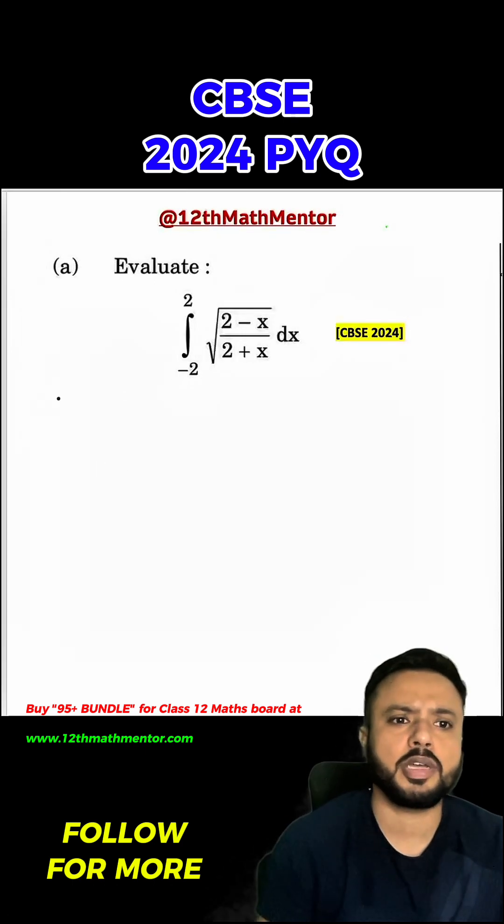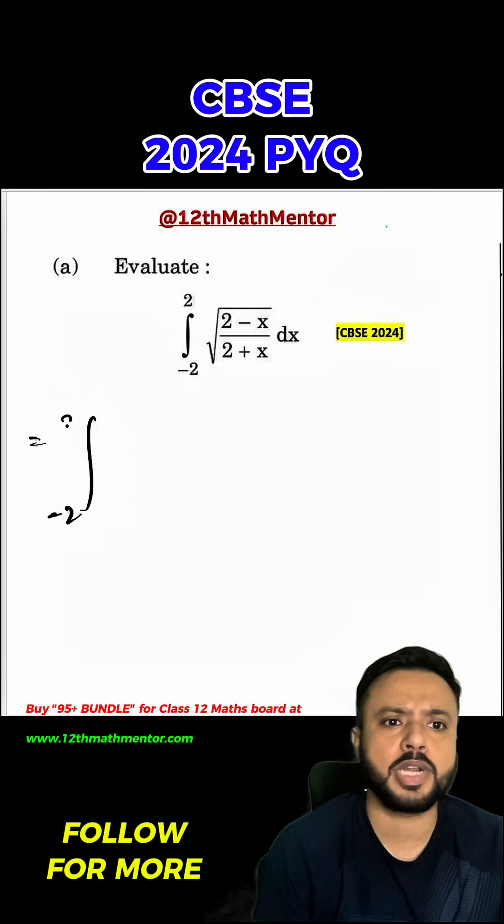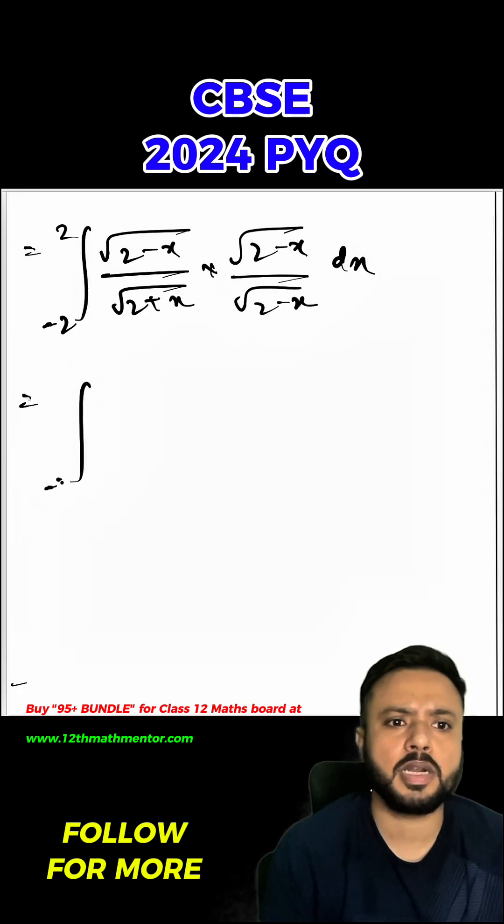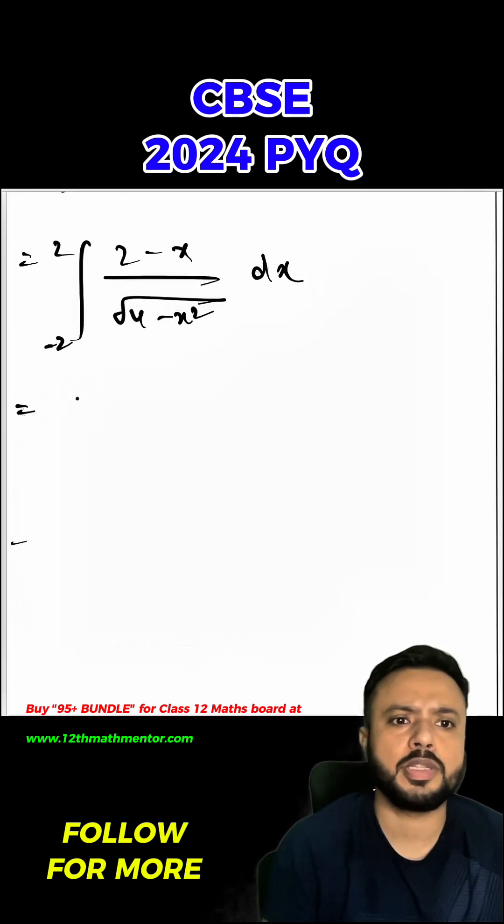CBSE 2024 Class 12 Maths board. We will solve this question. First of all, let's write this one. The integral from -2 to 2 of (2-x)/√(2+x) times √(2-x)/√(2-x) dx. When I multiply it, I will get... I will separate the numerator, so I will get...